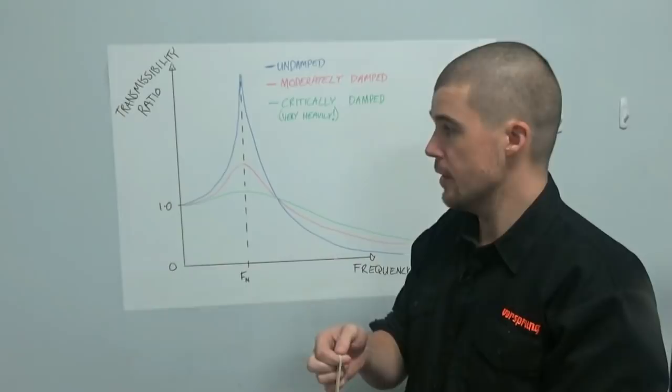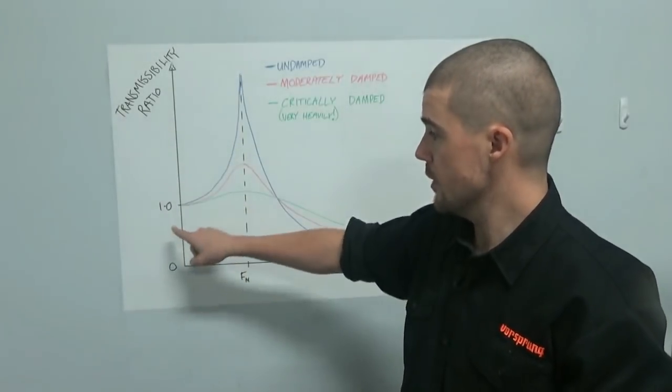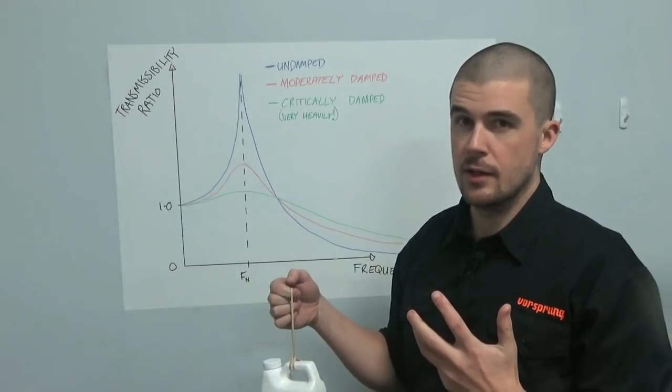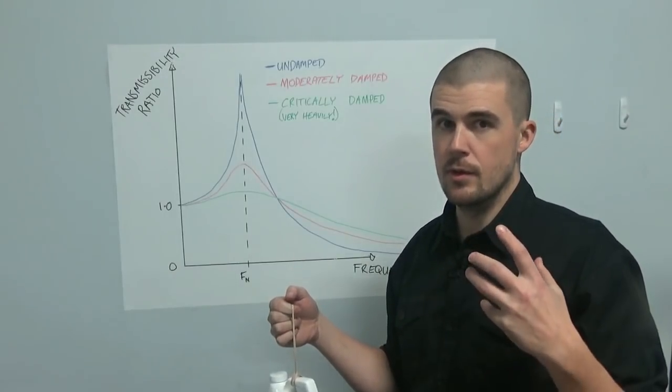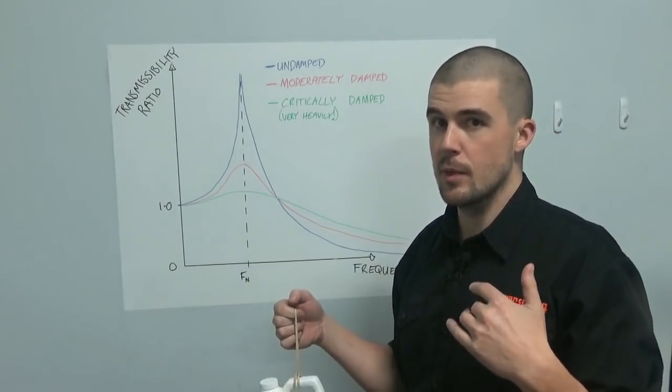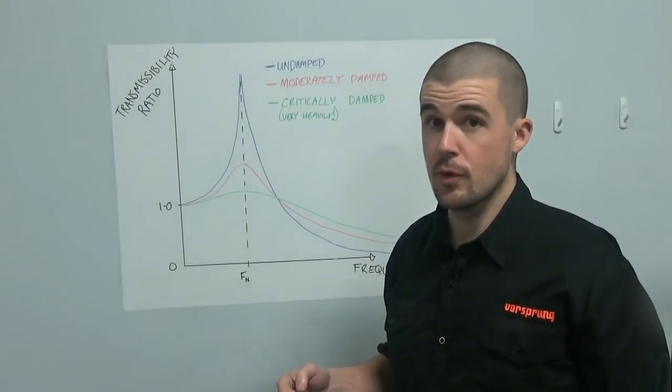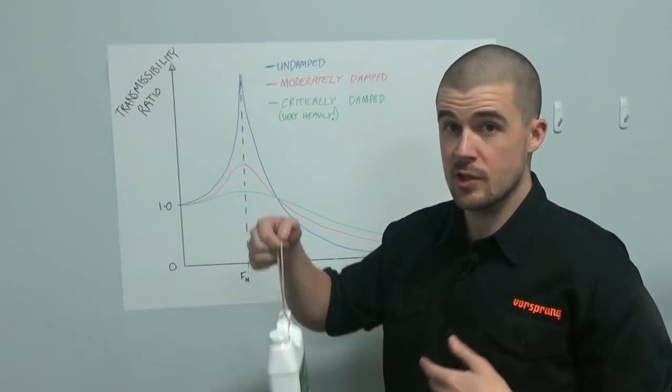Now, keep in mind that what this is a ratio of is displacement in, displacement out. The interesting thing here, though, is that that ratio is relative. It doesn't necessarily mean that at these higher frequencies that there's less force being transmitted because the force coming in through the wheel can be much higher.